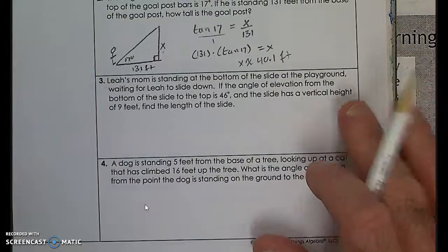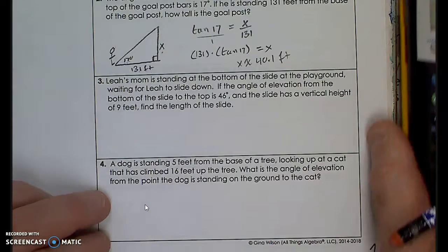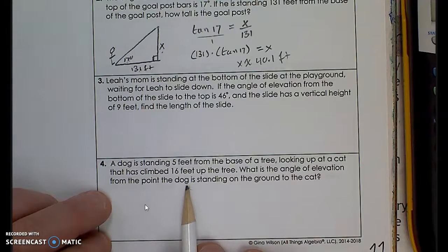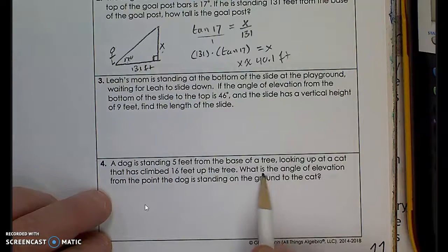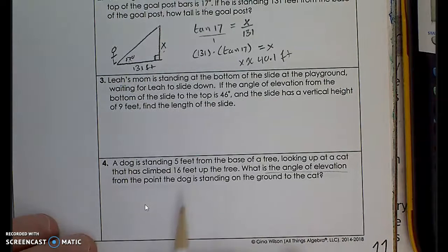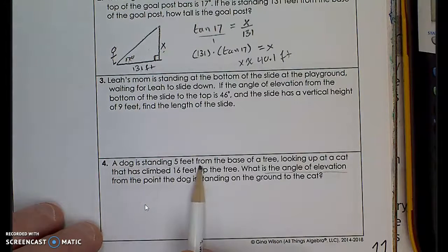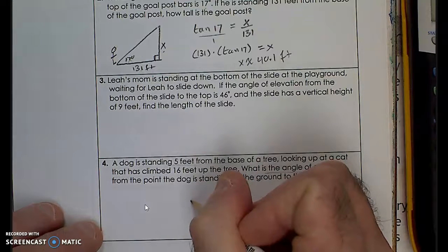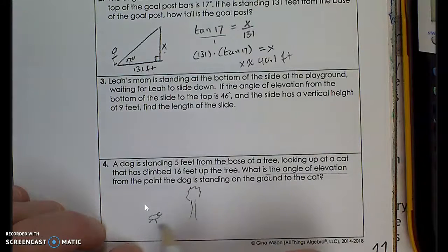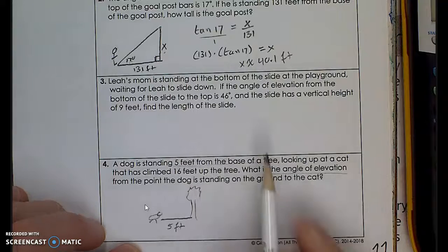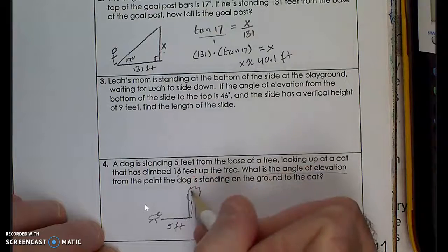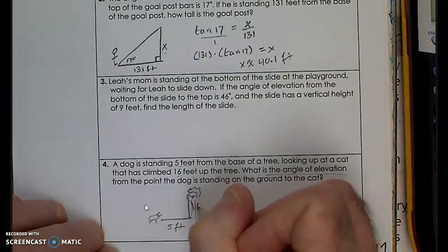Let's try question number four. A dog is standing five feet from the base of a tree, looking up at a cat that has climbed 16 feet up the tree. What is the angle of elevation from the point the dog is standing to the cat? I know the dog is five feet from the tree and the cat is 16 feet up. You can see how we can construct a right triangle to represent this real-life scenario.